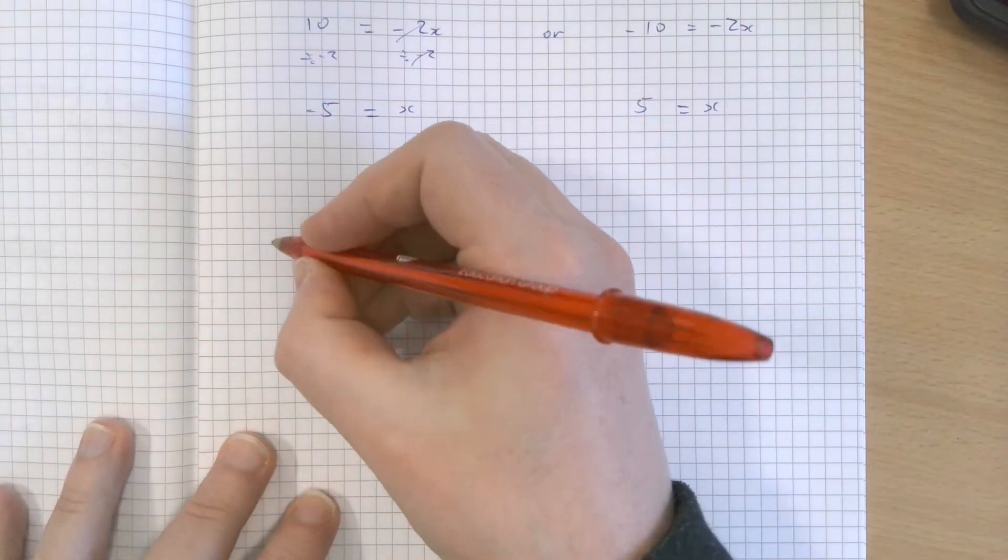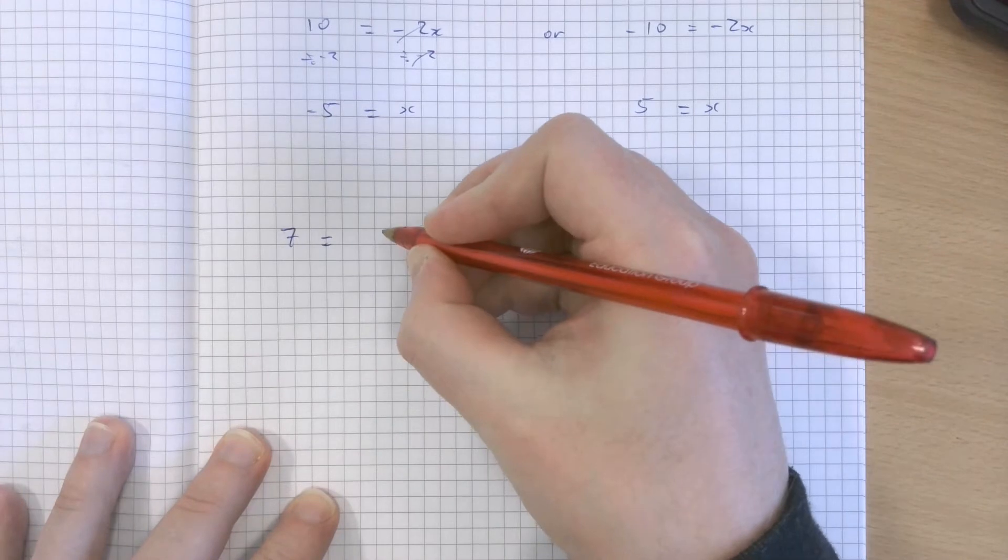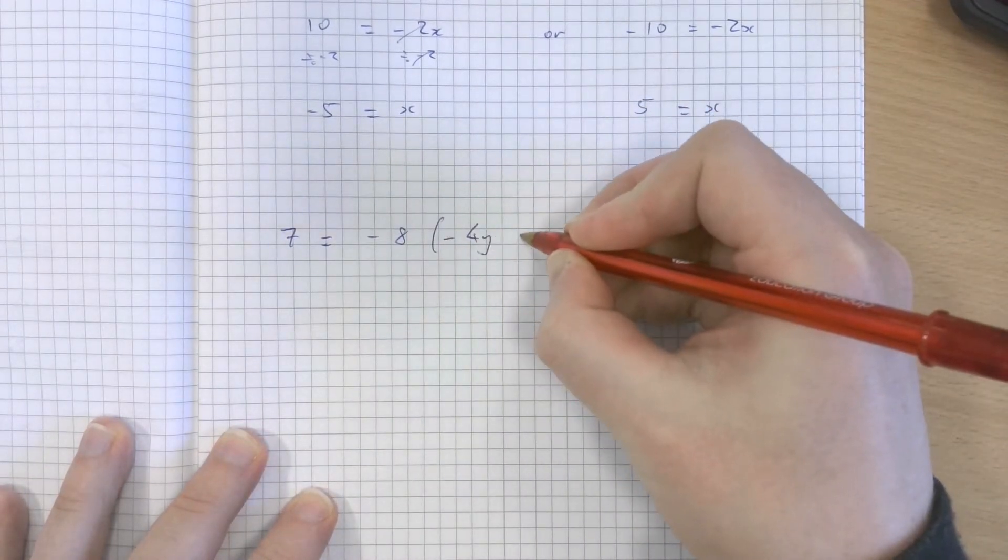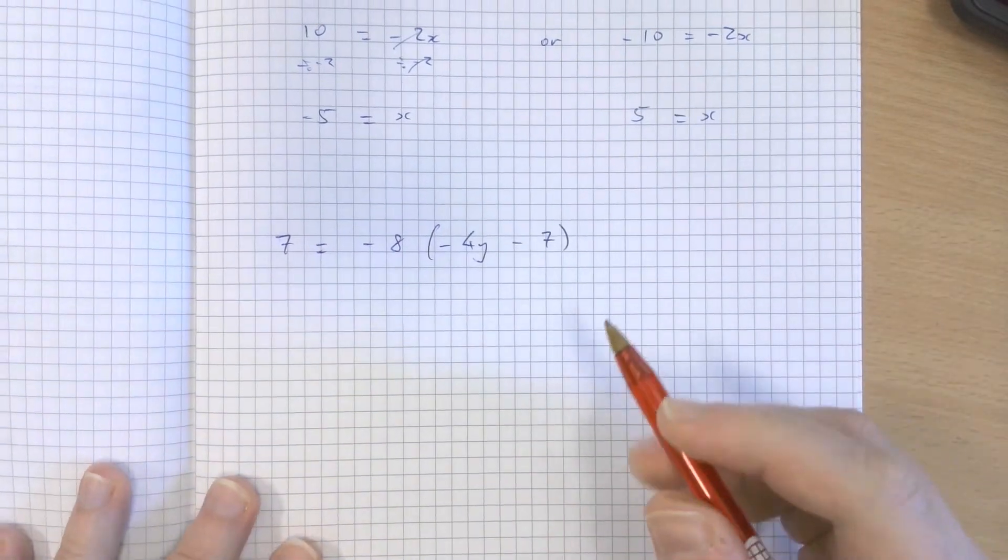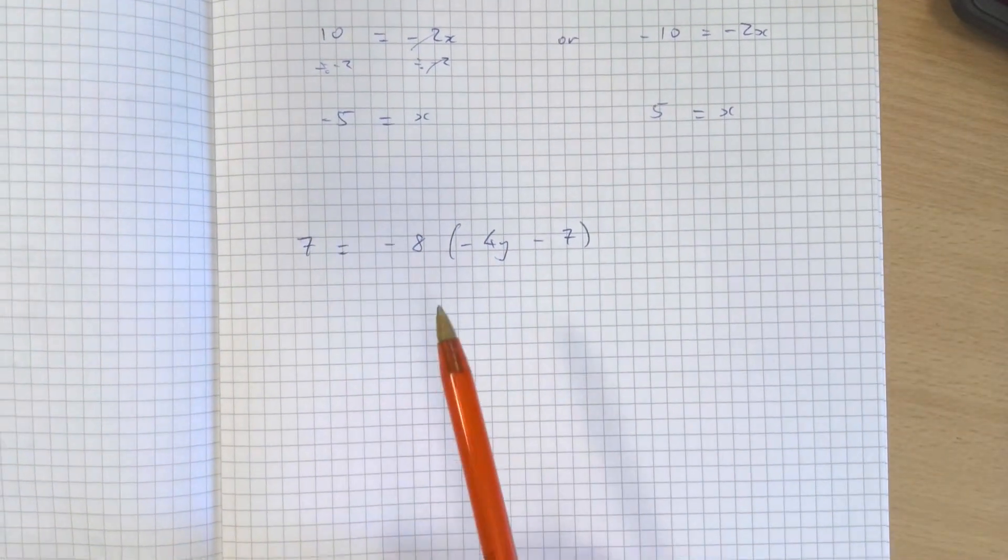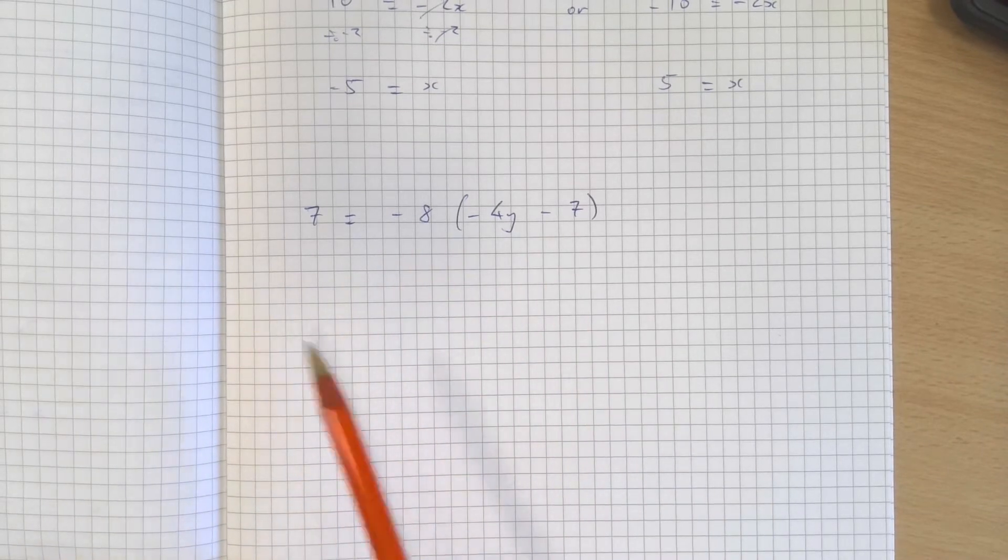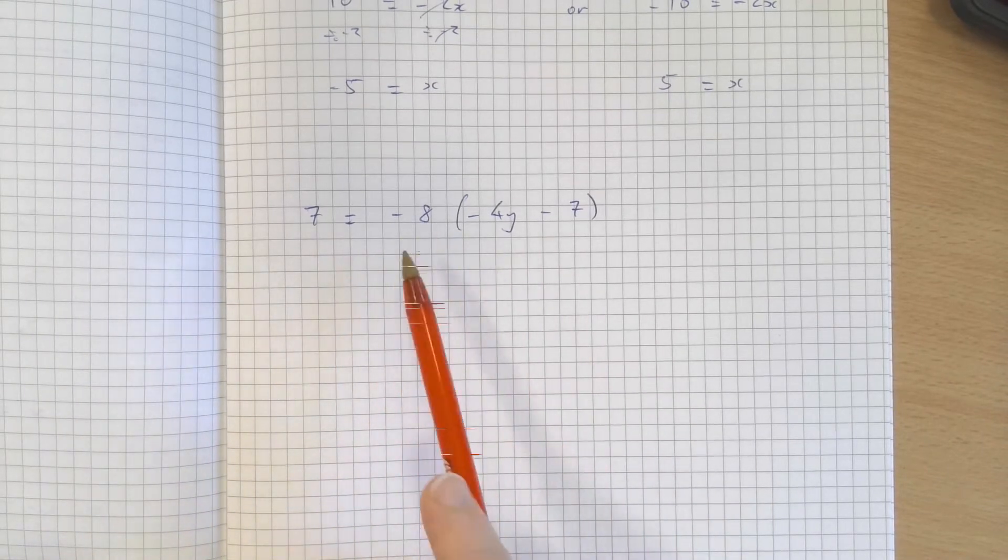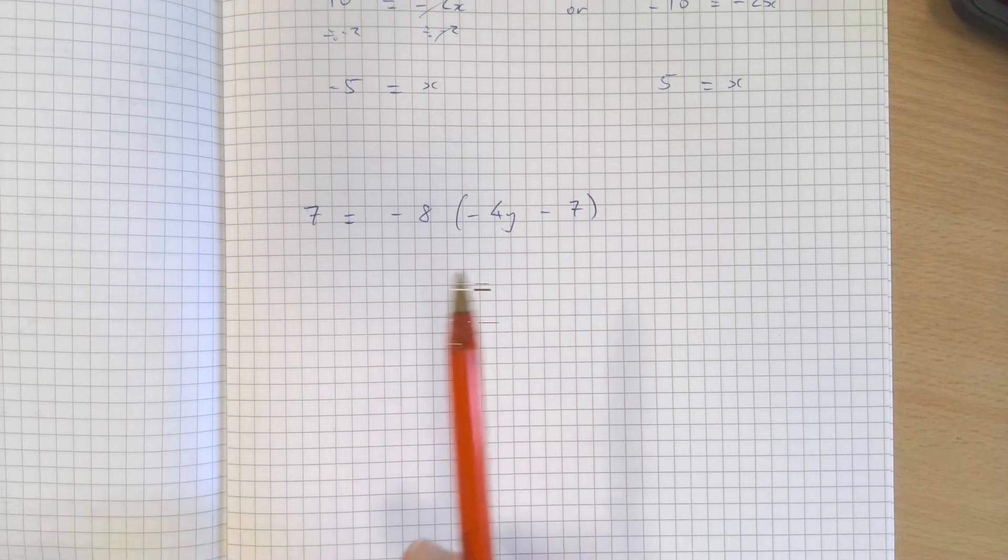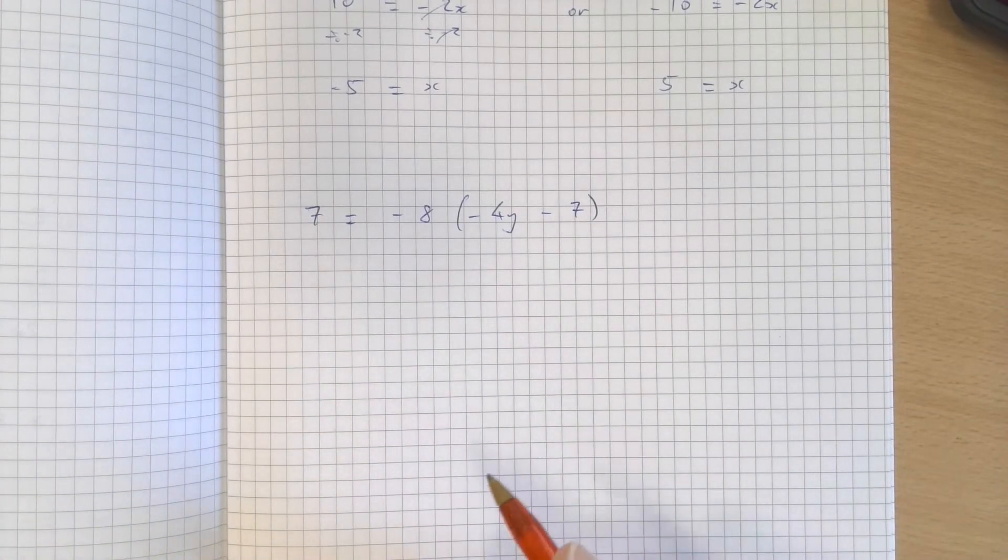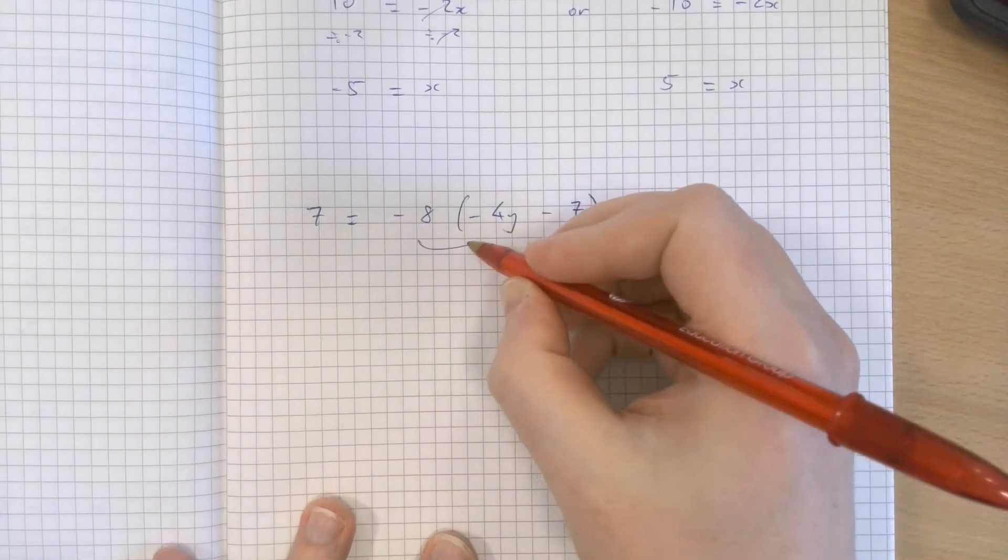The second part: 7 equals minus 8, open bracket, minus 4y minus 7. Now there's multiple ways we could consider doing this. We could either divide both sides by negative 8 first or multiply out the bracket and then rearrange. I'm going to do the multiplying out method, but you can choose to do this in whichever way you like.